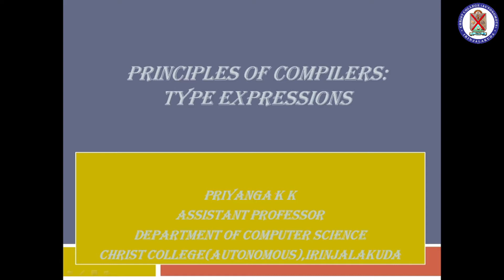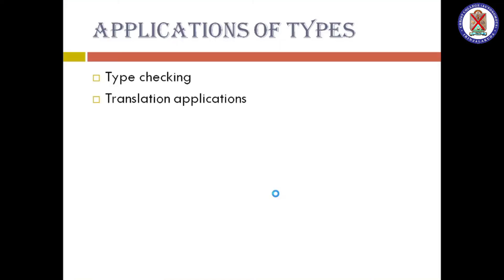In that, we see first the type expression. Before moving into the type expression, I will explain what are the applications of types — what is type handling, what is the need of type handling in compilers. The first one, as you already know, is called type checking.